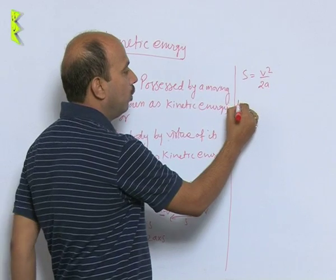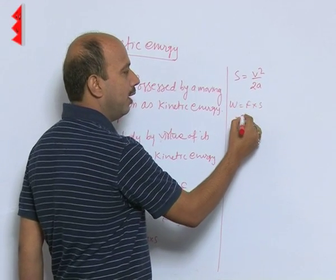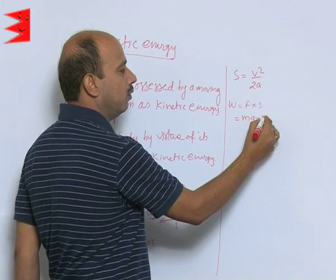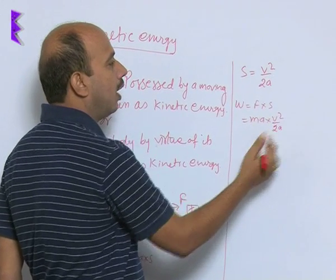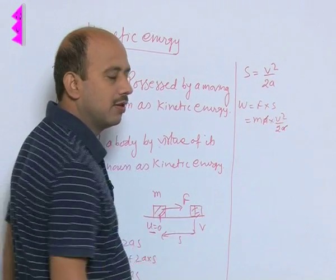Now what is work done? We know work is equal to force into distance. We can write m into a into v square upon 2 a. I have put the value of s over here. This a this a will get cancelled.